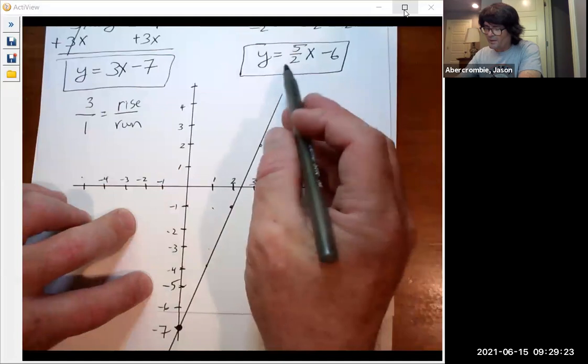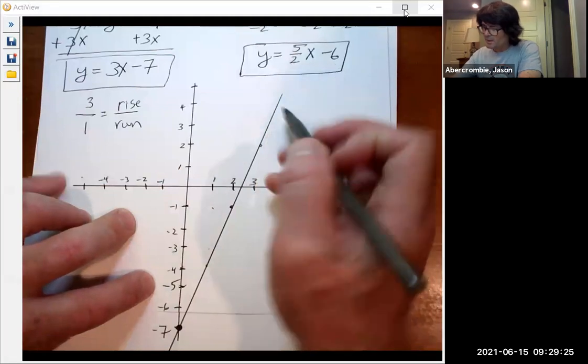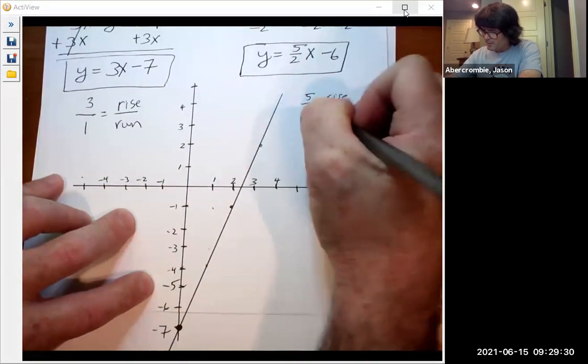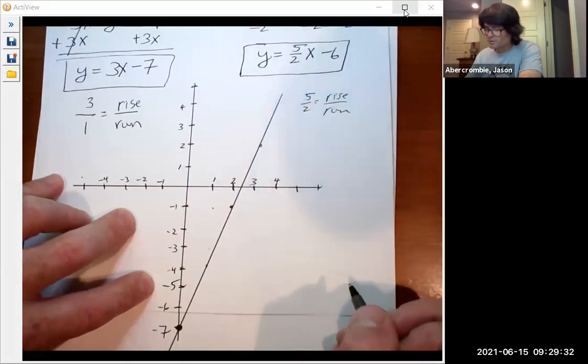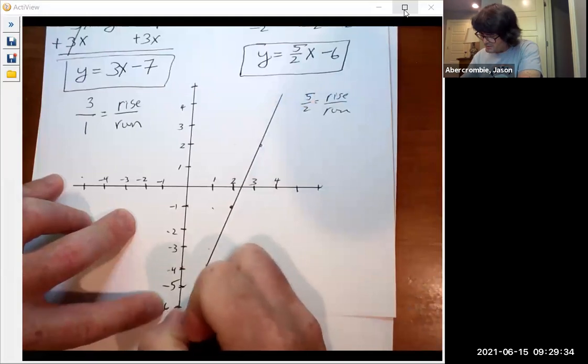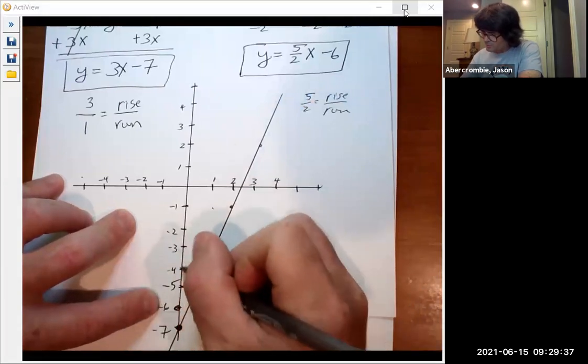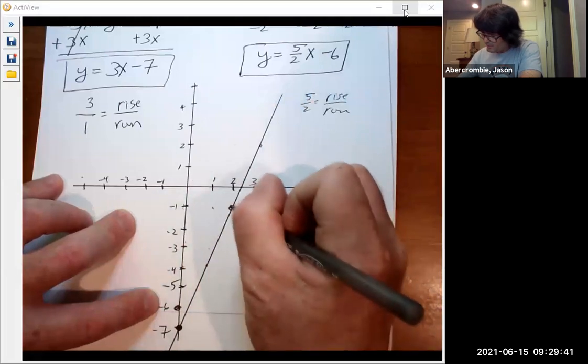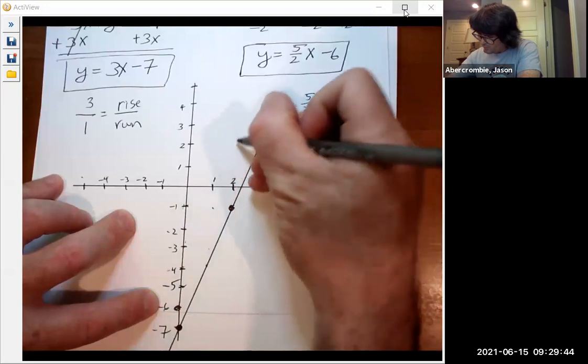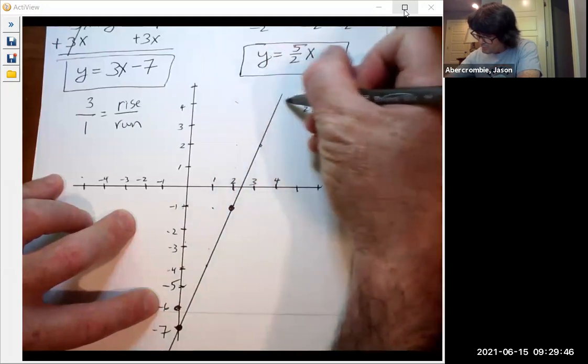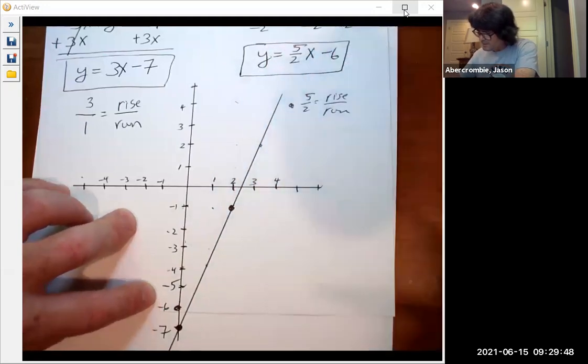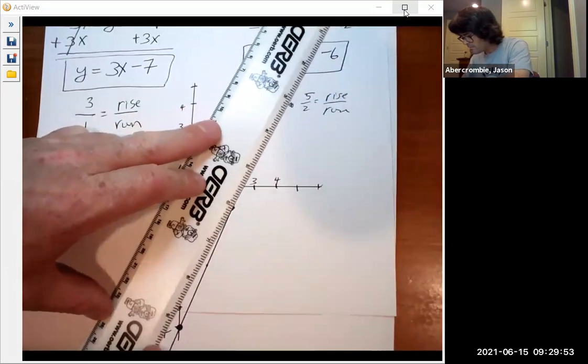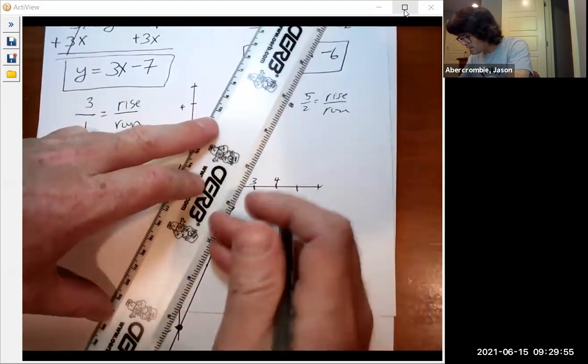This other line, 5/2x minus 6. Here, 5 over 2 is my rise and run. So rise 5, run 2. We're going to start this one at -6. We're going to rise 5 and then run 2 right here, and then rise 5 and then run 2 over here. And you can see this line is going to look like... get it straight here.